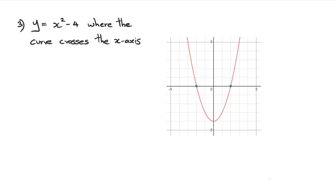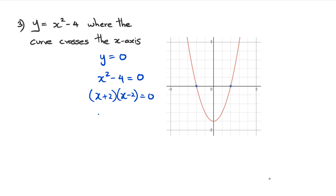In question three we have the parabola y equals x squared minus four, and we want to find the gradients where the curve crosses the x axis — those two blue points on the graph. When a curve crosses the x axis, y equals zero. So we set x squared minus four equal to zero and factorize to get (x + 2)(x - 2) equals zero, giving x equals positive two or negative two. As you can see, there's negative two and positive two on the graph.